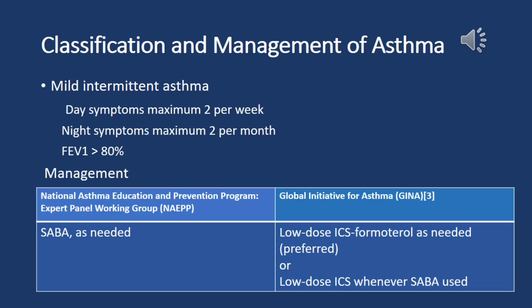Classification and management of asthma. Mild intermittent asthma: daytime symptoms maximum two per week, nighttime symptoms maximum two per month, FEV1 greater than 80%. The NAEPP recommends SABA — short-acting beta-agonists — as needed. GINA recommends low-dose ICS plus formoterol as needed, or alternatively low-dose ICS whenever SABA is used.